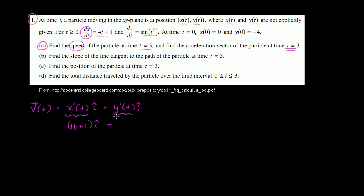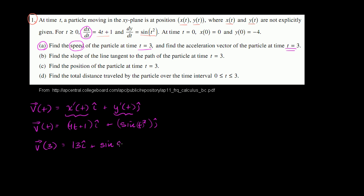And then y prime of t, they gave it to us: the derivative of y with respect to t is sine of t squared. So plus sine of t squared times the j unit vector. That is our velocity vector as a function of time. So what is our velocity vector at time t equals 3? We just substitute 3 for t: 4 times 3 plus 1 is 13i, plus sine of 9j.